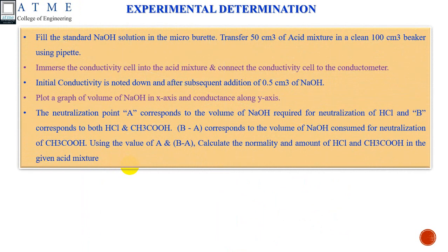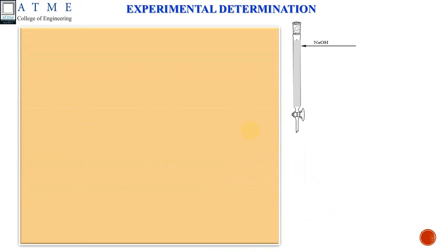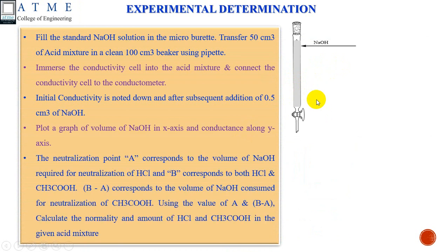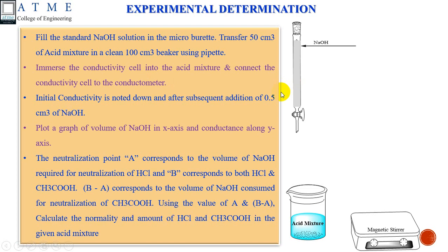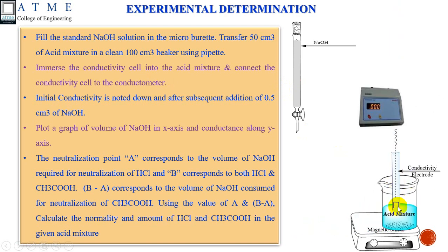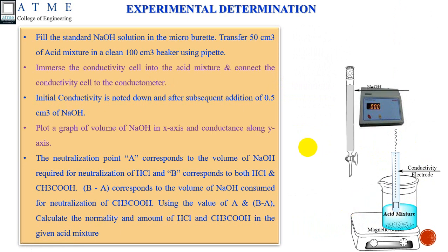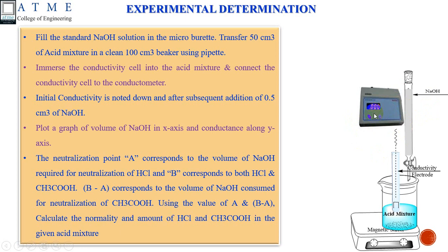Now we shall move on to the experimental determination. Fill the burette with standard NaOH solution. Transfer 50 cm³ of the acid mixture into a clean 100 cm³ beaker. Immerse the conductivity cell inside the beaker and connect it to the conductometer. Add the titrant, NaOH, and titrate the solution against NaOH. After each addition of NaOH, note down the corresponding conductance reading on the conductometer. There will be two equivalence points in this determination, which I will explain in the next slide.